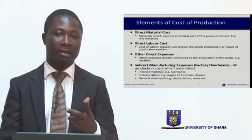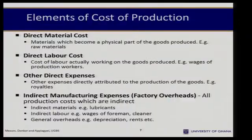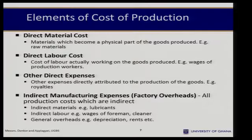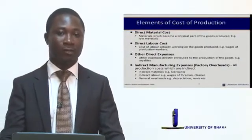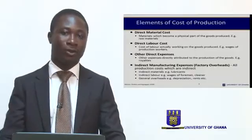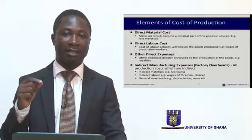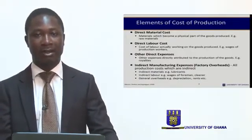Costs can be broken down basically into two: we have direct costs and indirect costs. Direct costs are costs which could easily be traced to the product, whereas indirect costs cannot easily be traced to the product which has been manufactured. With direct costs, we have direct material costs, direct labor costs, and direct expense.